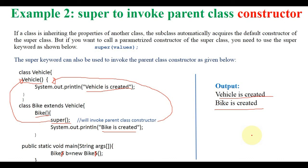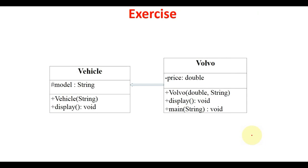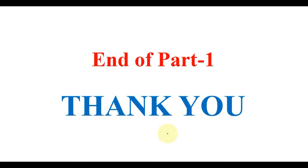We will discuss constructors in more detail later including their types, but for now understand this concept. We have covered three scenarios where the super keyword is used. Now it's your turn to do an exercise — there is a UML diagram representing a Vehicle interface and a Volvo class, since Volvo is a Vehicle. Please practice it to assess your learning level. That's all for part one; we will discuss interfaces in the second part. Stay safe, stay home, Allah Hafiz, assalamu alaikum.